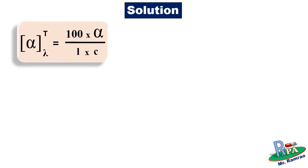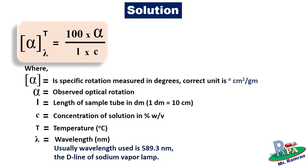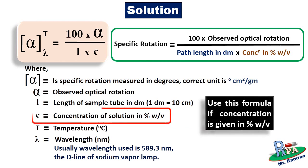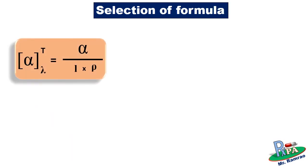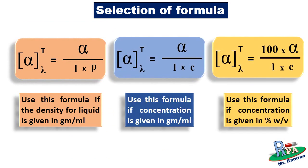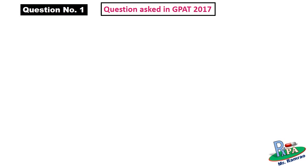If the question asks you to calculate specific rotation and the concentration is given in percent weight by volume, use this formula. All other parameters are the same as in the previous formula — the only change is the concentration unit, which is percent weight by volume. Now you must be able to select the correct formula based upon the given conditions. If concentration is given in percent weight by volume, don't forget to multiply by 100.